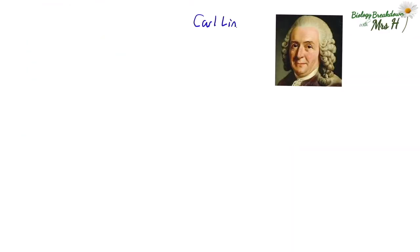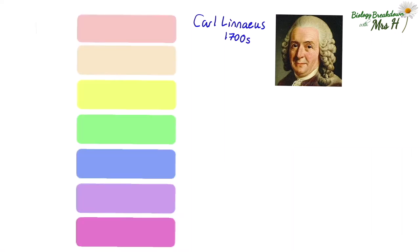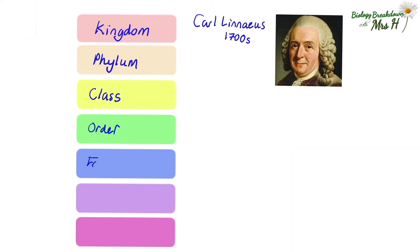Carl Linnaeus was around in the 1700s and suggested a way of categorising and naming organisms. The categories are called taxonomic groups and are placed in a hierarchy. Organisms are sorted into the first taxonomic group, called a kingdom, and there are five different kingdoms. Each kingdom is divided into smaller taxonomic groups starting with phylum, then class, orders, families, genuses, and species.